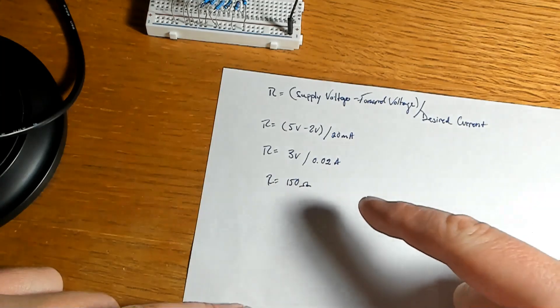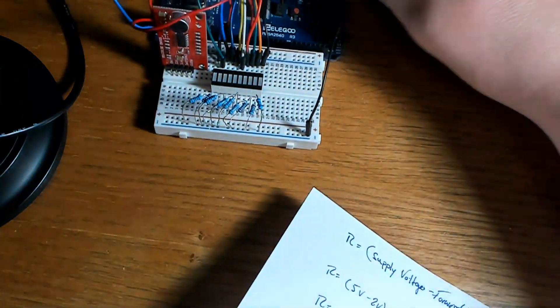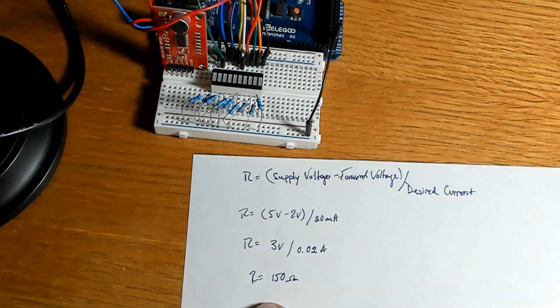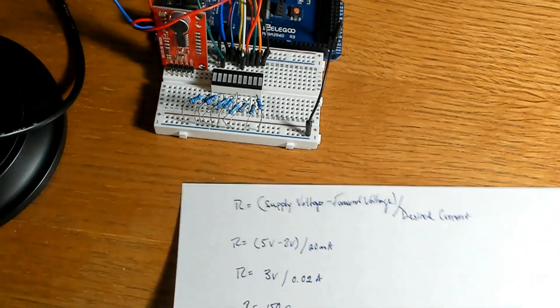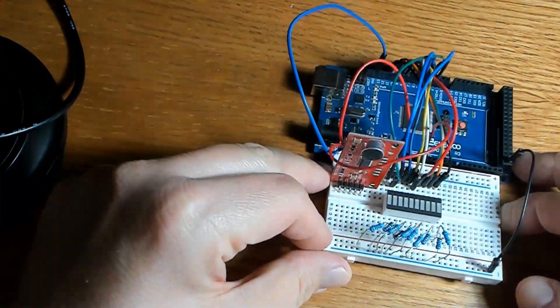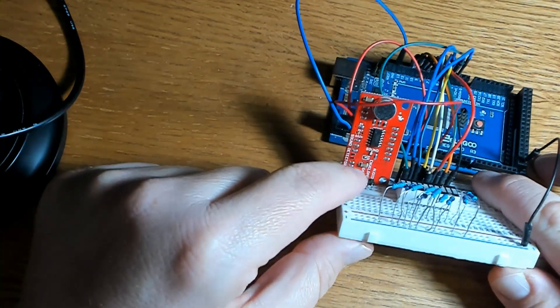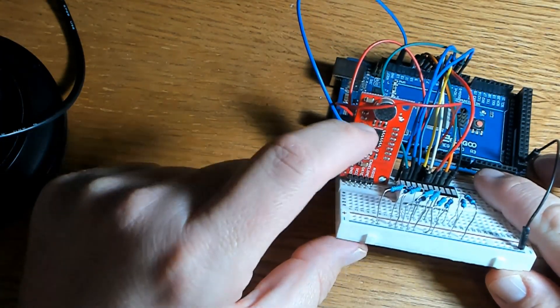But for me I'm using 220 because it is available and I have a ton of them. So 220 is fine. It'll just be a little bit dimmer than what 150 may be. Once I located the positive and negative side of the LED bar, I connected the positive side to Arduino pins 2 through pin 11